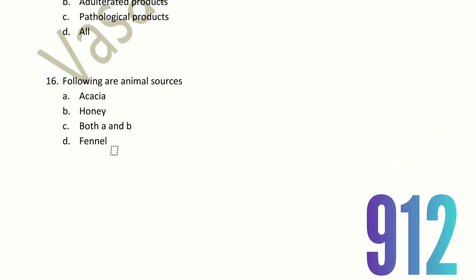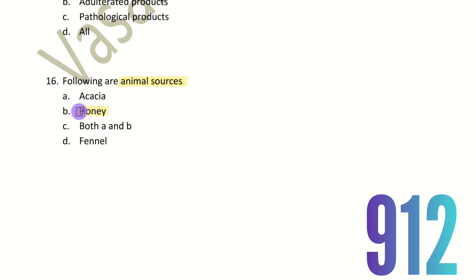Sixteenth question: Which of the following are animal sources? The choices are Acacia, Honey, both A and B, and Fennel. Acacia comes from plant sources and Fennel is also a plant source. Honey is obtained from bees, which are animals. Hence, Honey is the animal source — the right answer is Honey.